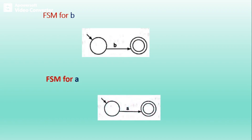Now we will construct FSM for A — start state, transition on A, then the next state. So from B union AB whole star, we have now built FSMs for the basic elements B and A.